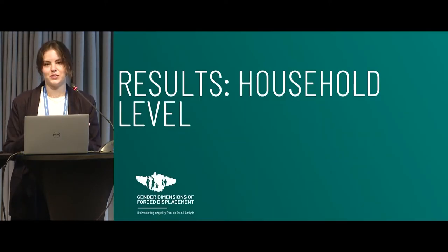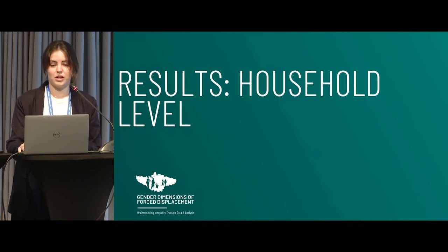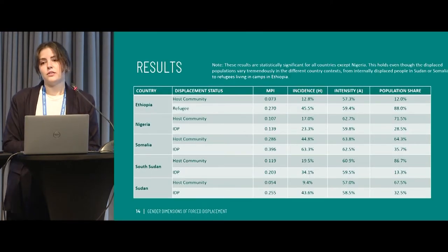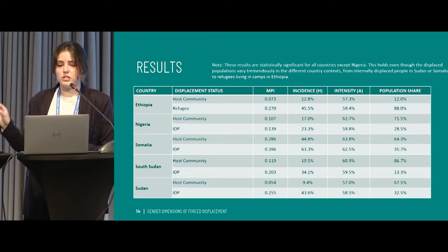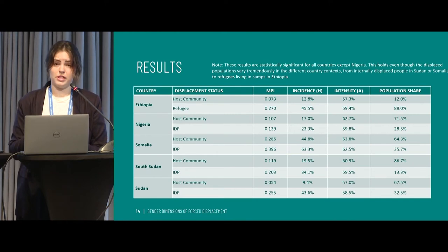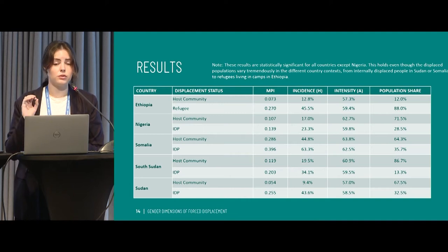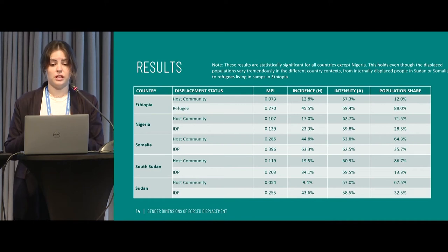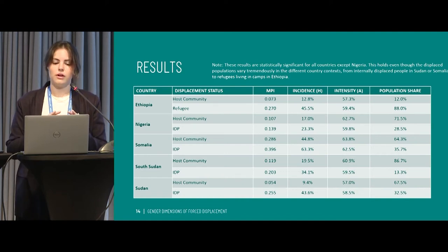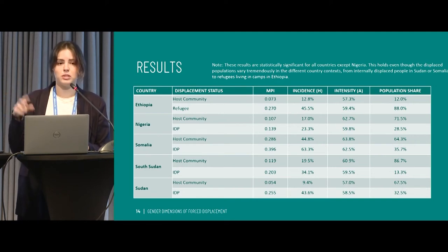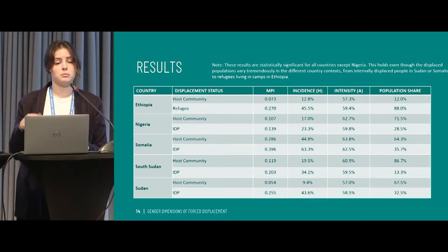Looking at the household level results: in all countries except Nigeria, we saw a significant difference in poverty between hosts and IDPs, with IDPs experiencing higher rates of poverty. For Ethiopia and Sudan, which are the two camp samples, that difference is really huge. In Ethiopia, the refugee population makes up 88% of the sample. In Sudan, the population share of IDPs was much smaller than their host peers, and still their poverty was much higher.